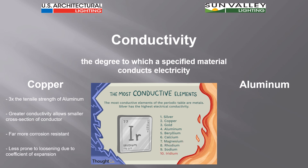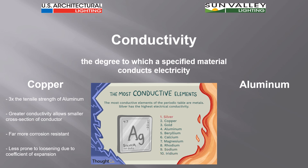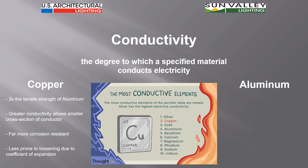Copper is also far more corrosion resistant than aluminum. Copper has been used in roofing for centuries because it doesn't really corrode — it forms a patina surface that adds to rather than subtracts from the copper. Another factor in copper's favor is that it is less prone to loosening due to coefficients of expansion. With aluminum, expansion and contraction at a terminal connection can cause it to work itself loose. That doesn't happen with copper because it has a very low coefficient of expansion, making it a preferred material for wiring and electrical circuits.